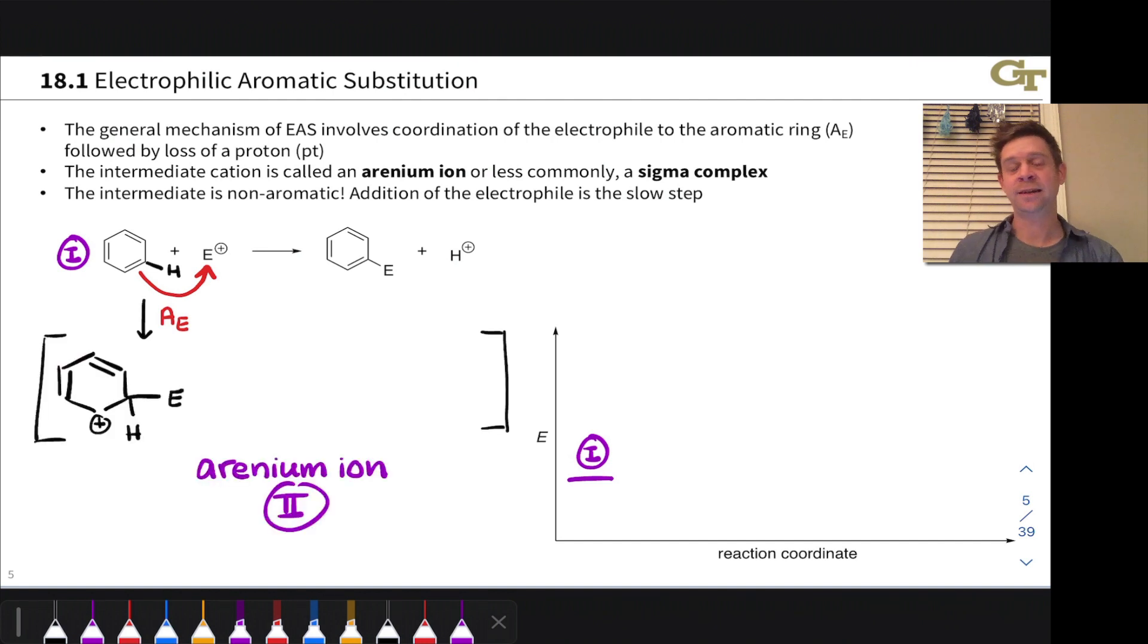We would label this an A sub E step. It's association of an electrophile to a pi system using a pair of pi electrons as the nucleophile.